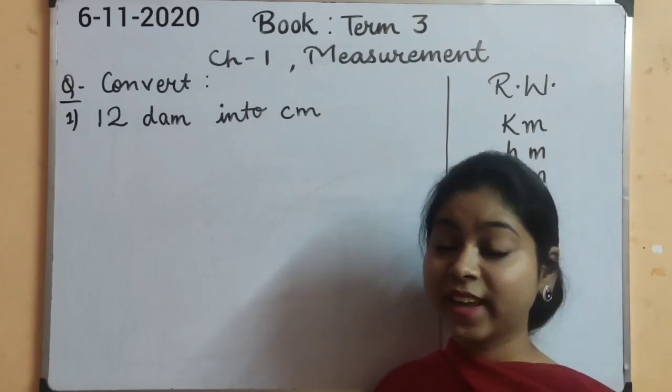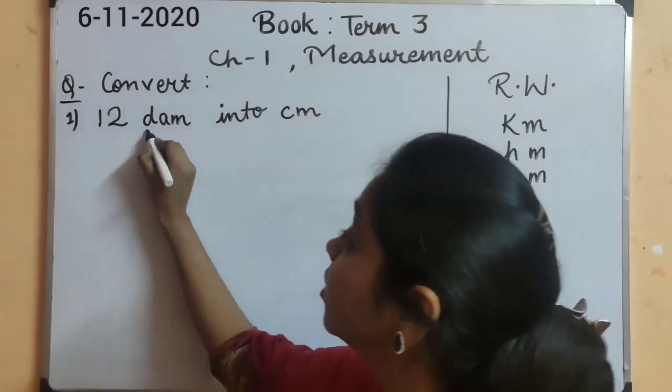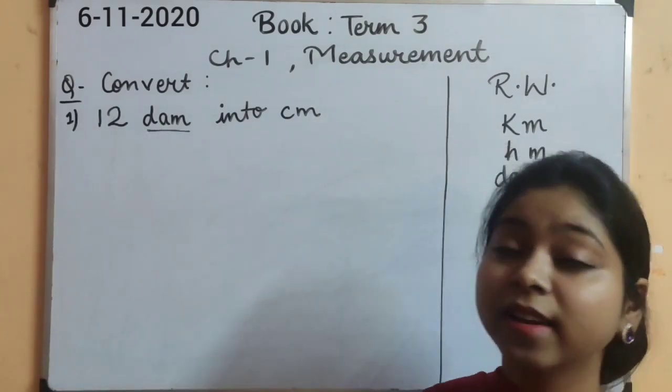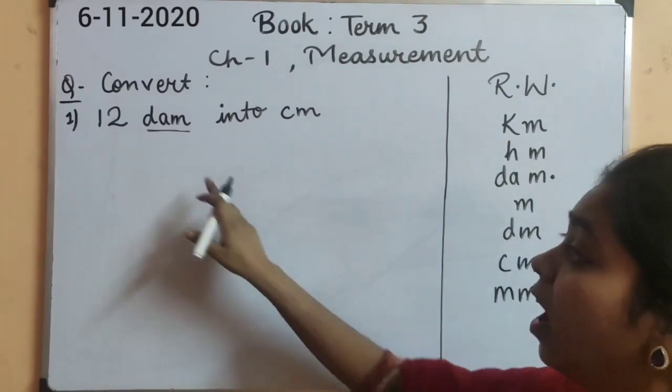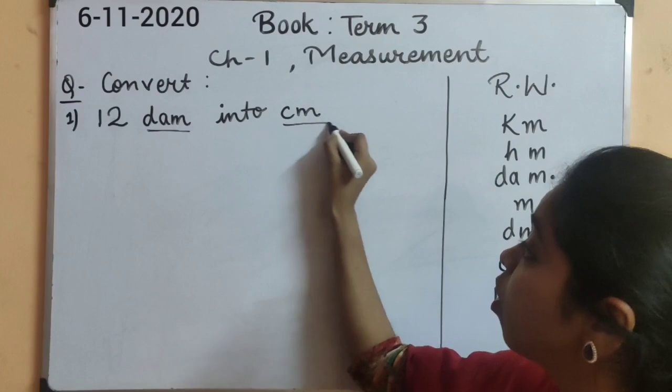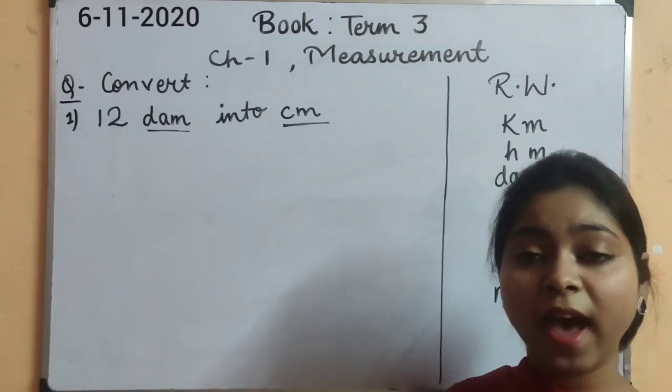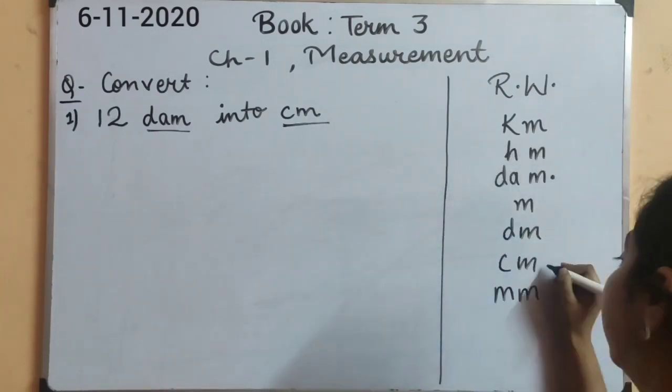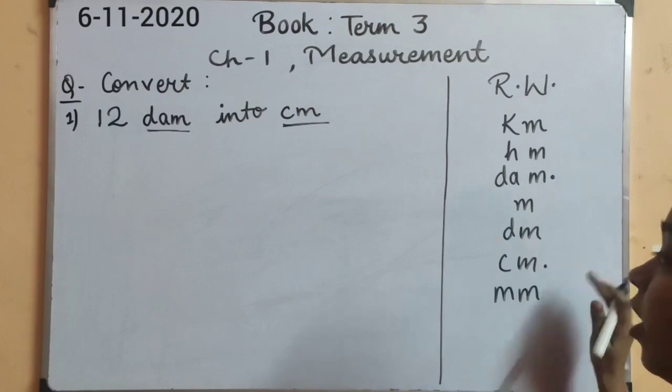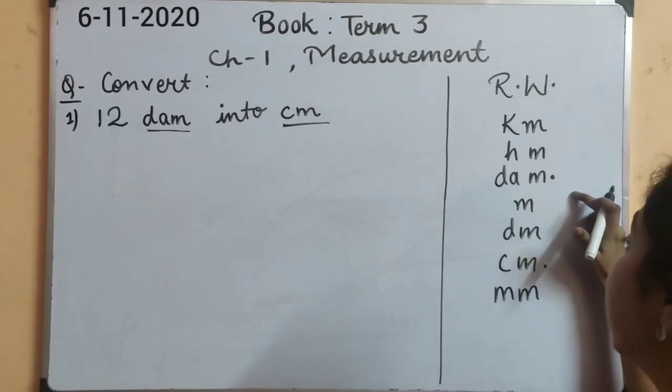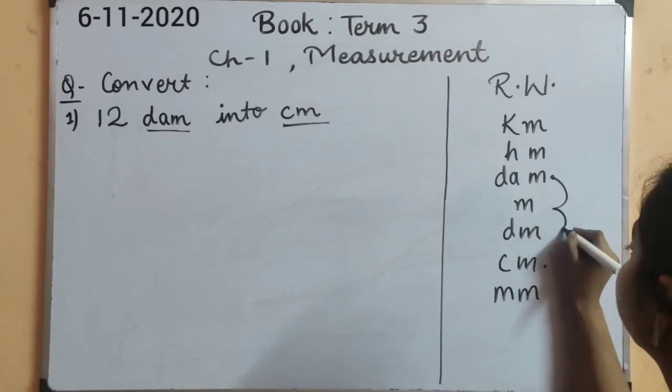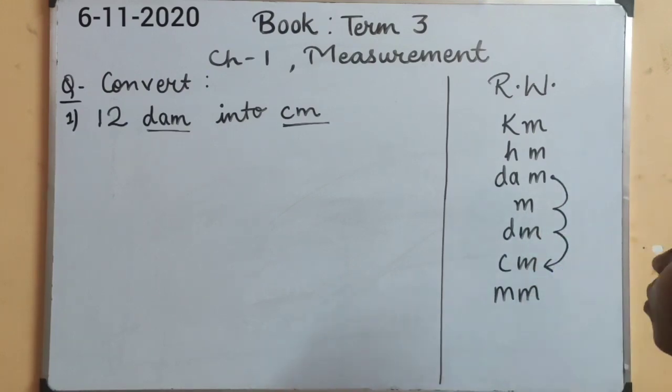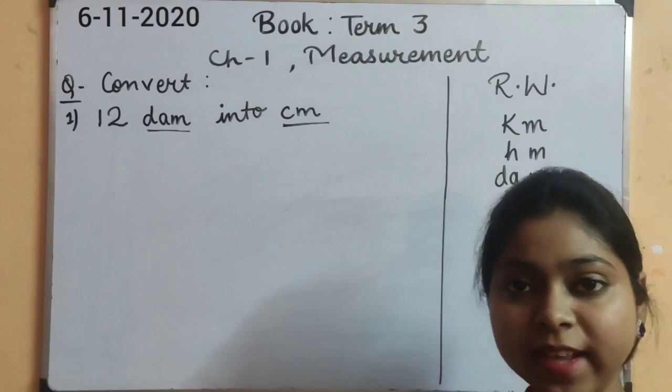Now just check at which unit the number is there. The number is at decameter. And to which unit does it need to go? It needs to go to centimeter. So here we need to check how many places it will go downward. One, two, three. So it will go three places downward.